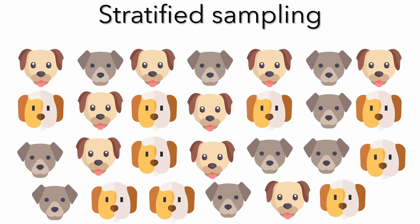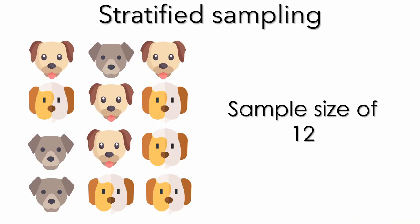We have 27 dogs in this picture. Imagine that only three types of dog breeds exist, but we want to find the average kilograms of meat they eat per month. Each dog breed eats a different amount. We don't want to ask every owner, so we want to get a sample of 12 dogs.